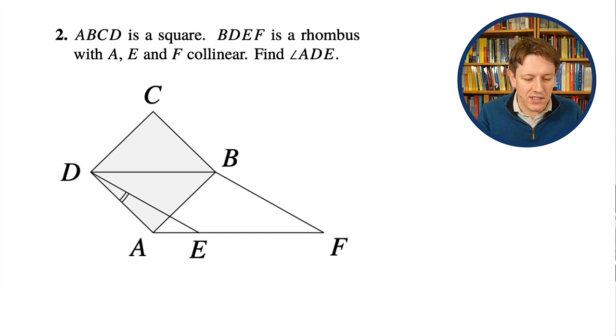So we've got ABCD is a square, BDEF is a rhombus, so I could label its sides as being all equal, that's what it means to be a rhombus, and A, E, and F are collinear, so AEF is a straight line. We want to find this angle ADE.